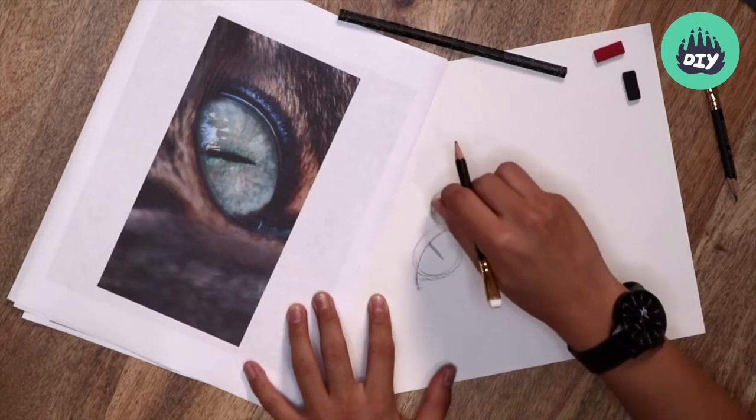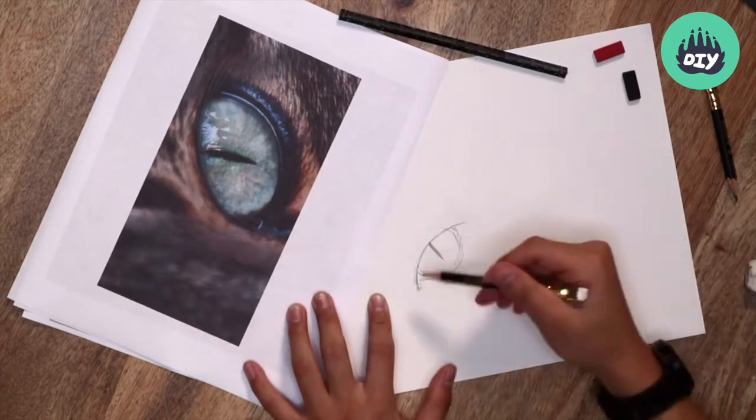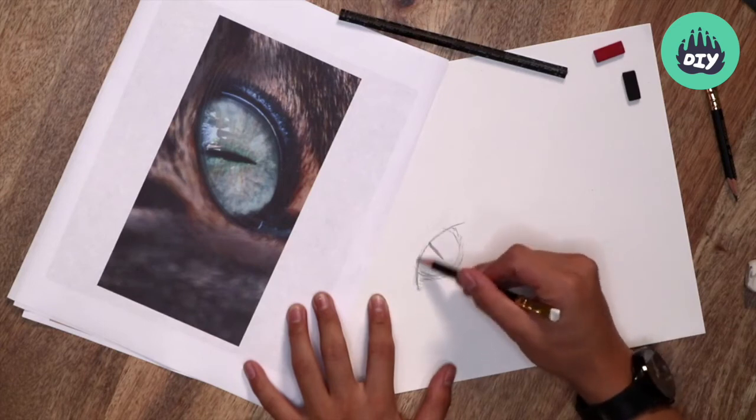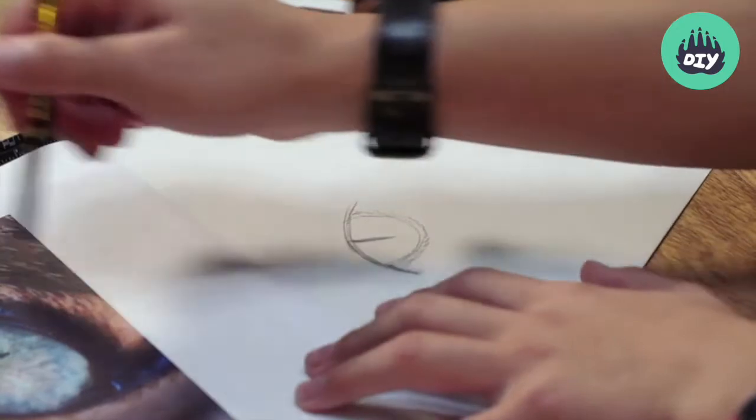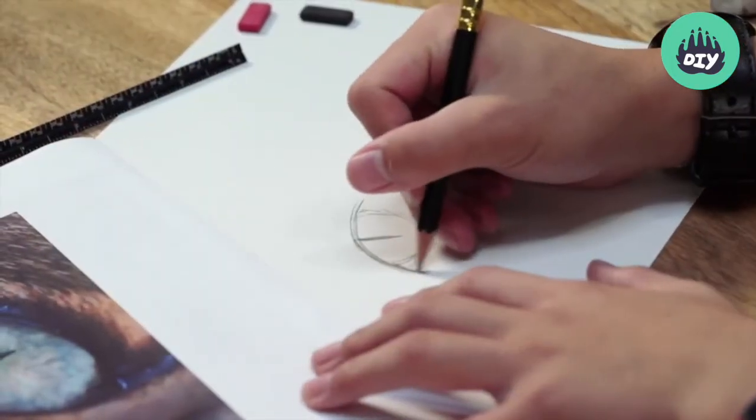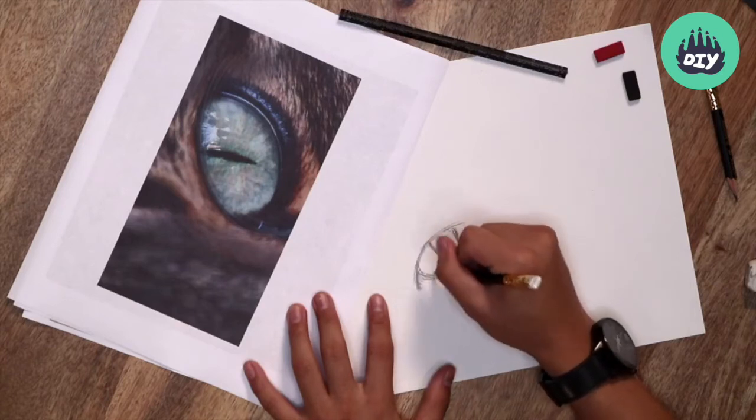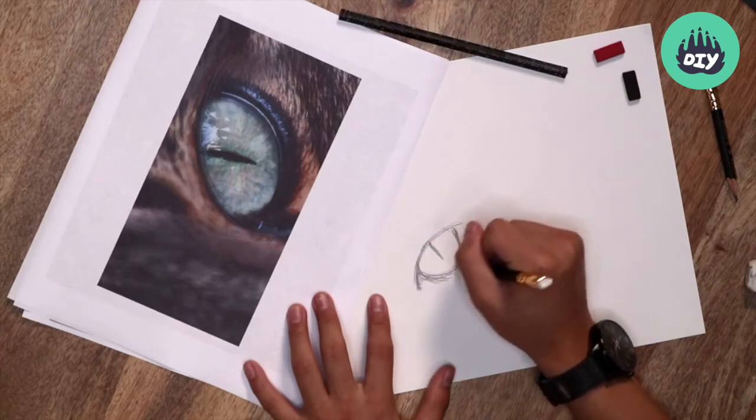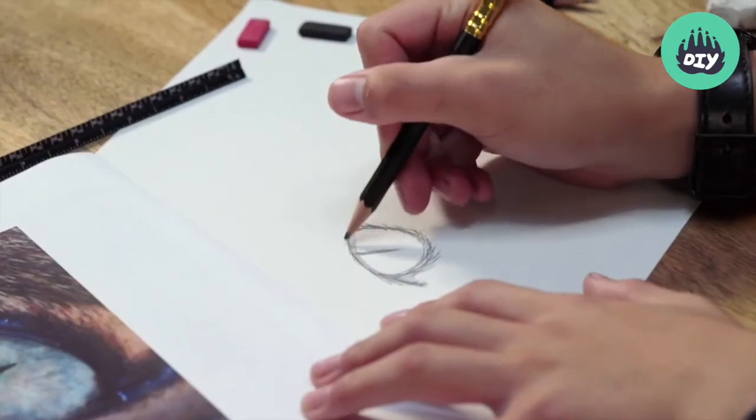And we can erase the lines that we don't want and start blocking in the details that make it up. So I might darken the fur around the eyes like this. And I'm using short strokes because cats have fur. So we want to get that kind of texture.